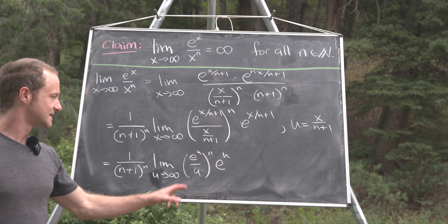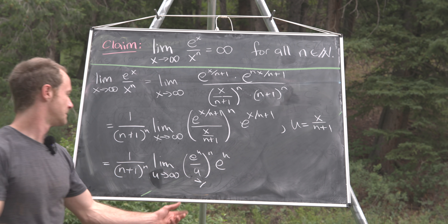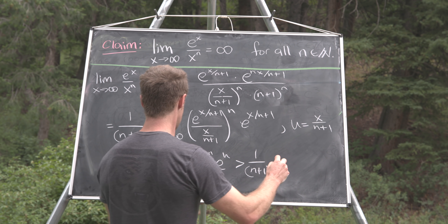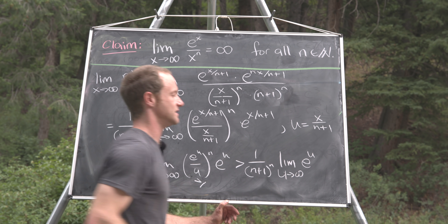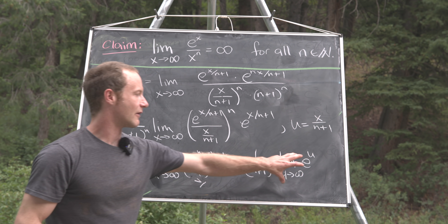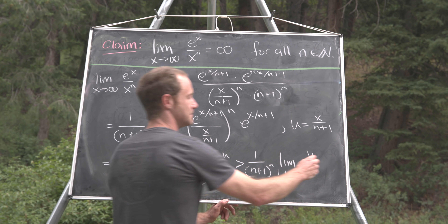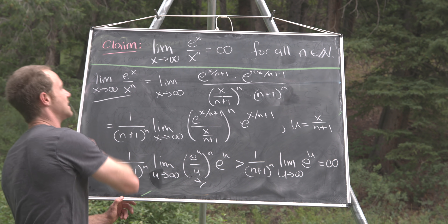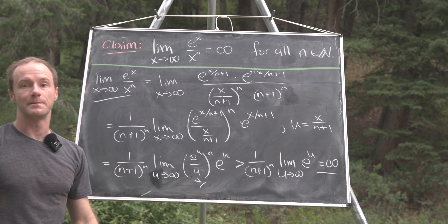Now we can use our fact: e to the u over u is bigger than 1, making this limit bigger than 1 over n plus 1 to the n times the limit as u goes to infinity of e to the u — because that piece is bigger than 1. But our other fact says the limit of e to the u is infinity, and this is just a constant, meaning we have a constant times infinity, which is infinity. So this proves our claim, and that's a good place to stop.